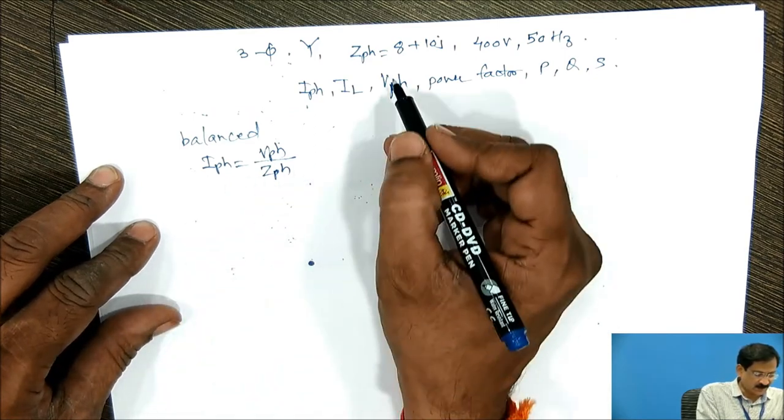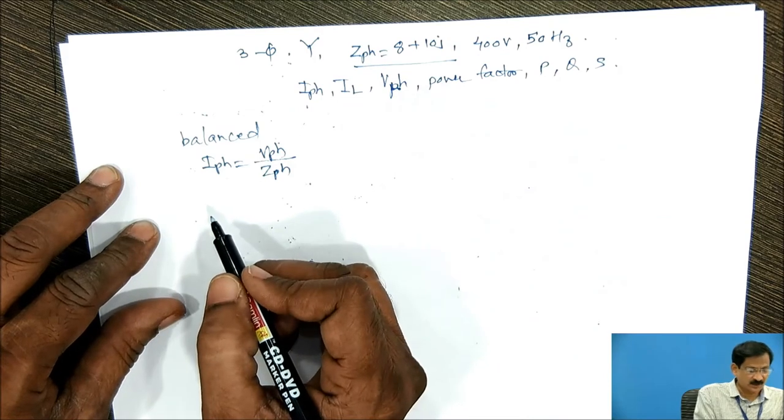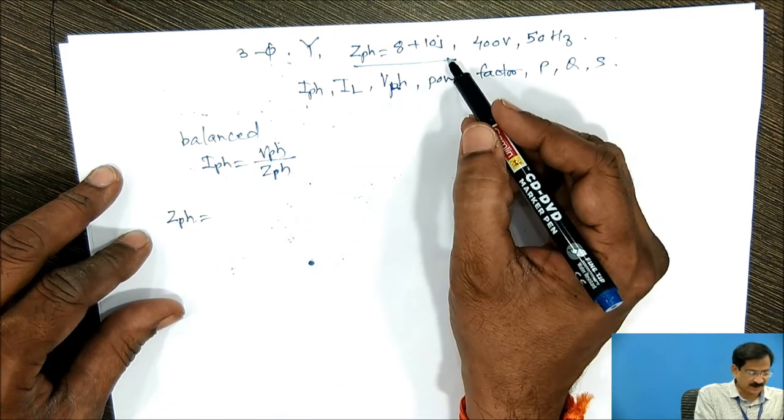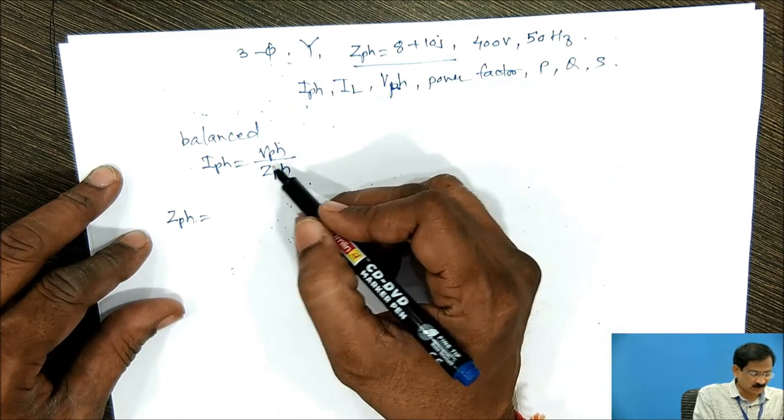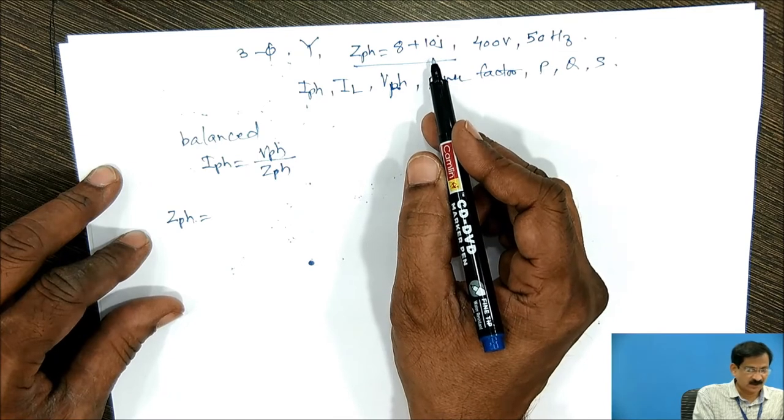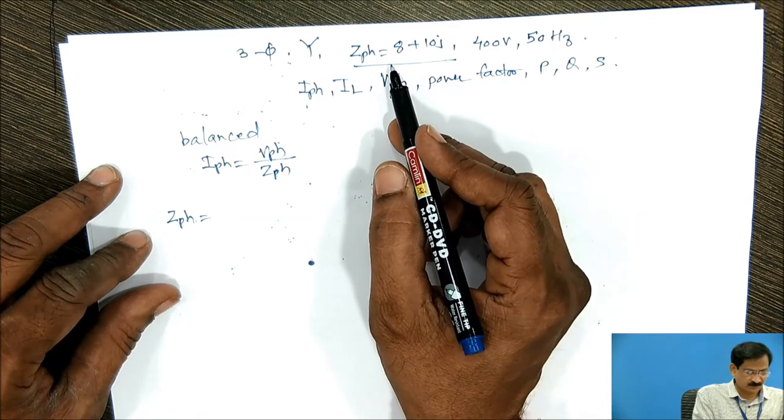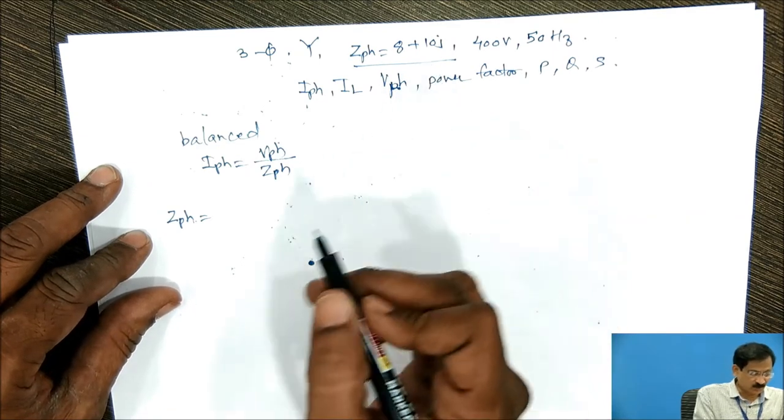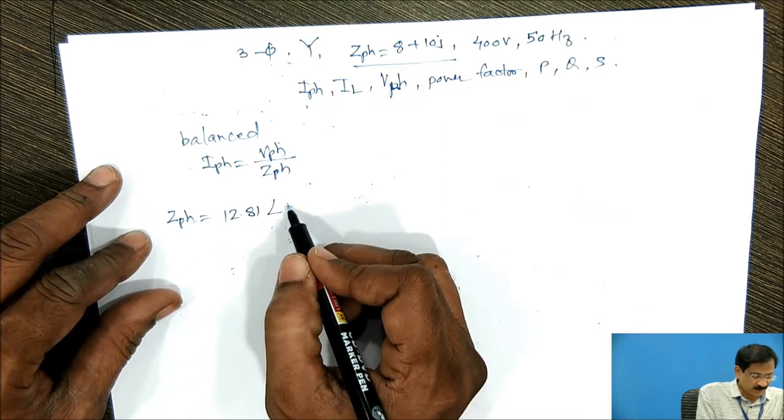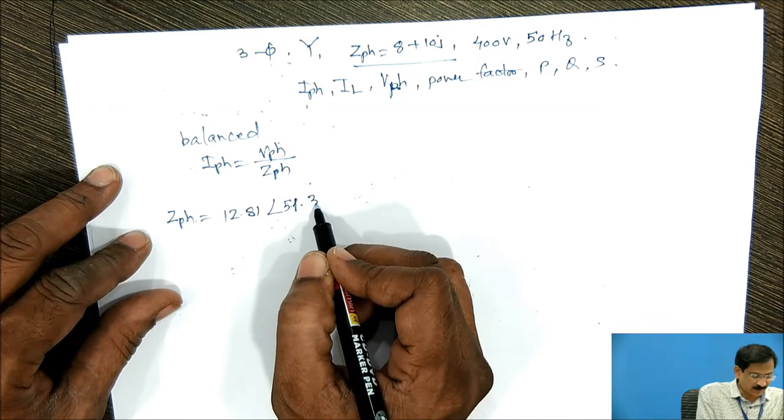So what is Zph? It is 8 plus 10j. Zph, which is in rectangular form, since we want Iph which is equal to Vph upon Zph. Converting rectangular form into polar form, it comes out to be 12.81 angle 51.34 degrees.